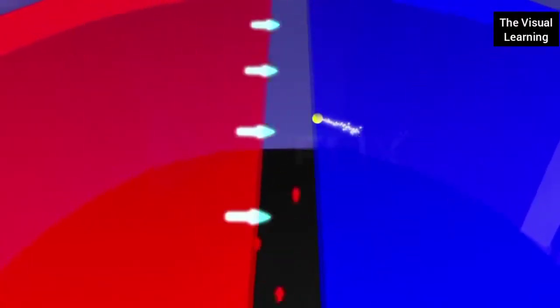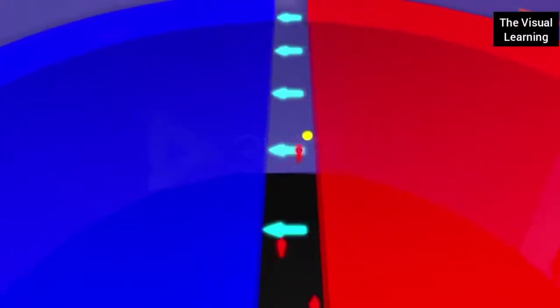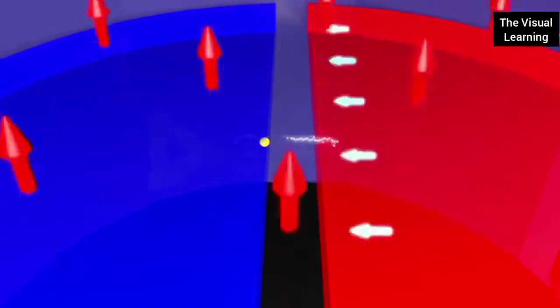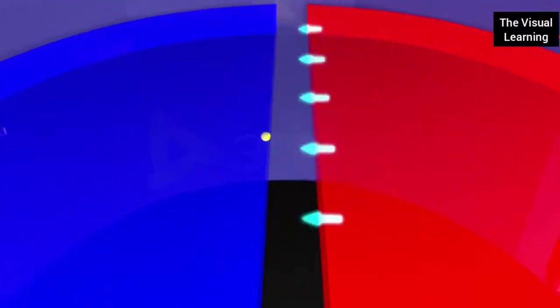When the particle comes out from D2, polarity of the D's change. This causes the particle to accelerate from D2 to D1 and enter D1 with a greater speed.